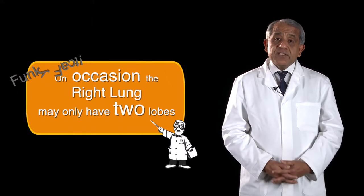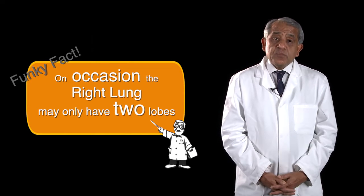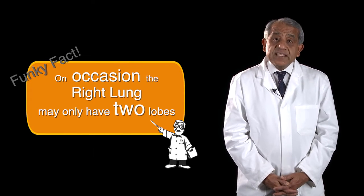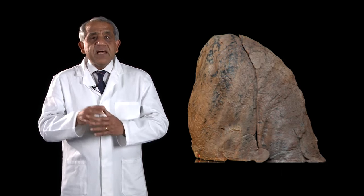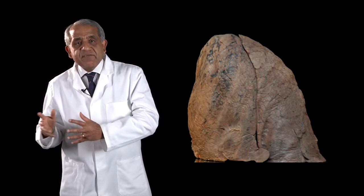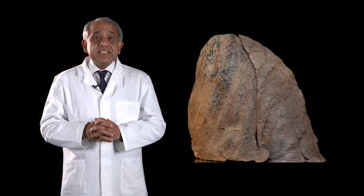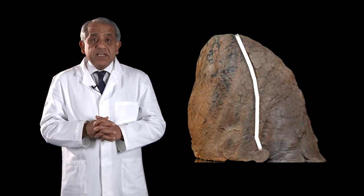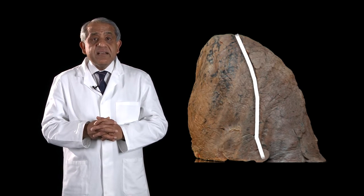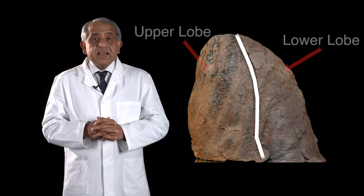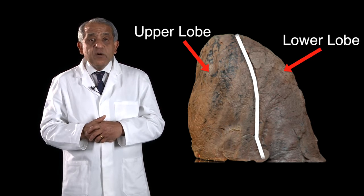On occasion, even the right lung may have just two lobes. This happens in about eight to ten percent of individuals. Now let's have a look at the left lung. There is a deep obliquely placed fissure which divides the left lung into two lobes, an upper lobe and a lower lobe.